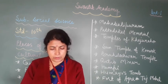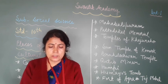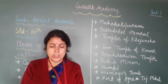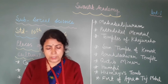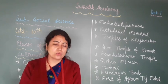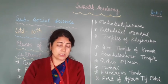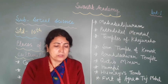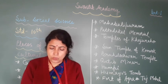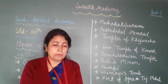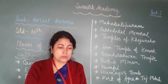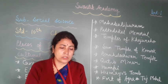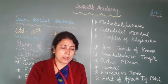The Taj Mahal was constructed by Mughal King Shahjahan in memory of his queen Mumtaz Mahal. Construction began in 1632. Shahjahan called expert Indian sculptors and Arab, Turkish and European sculptors for its construction.